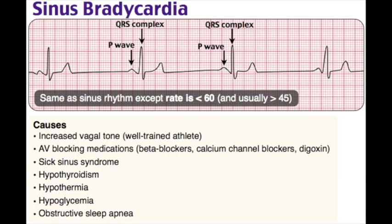Sinus bradycardia: heart rate under 60 bpm from the sinus node. Physiologic causes: well-conditioned athletes, vasovagal reaction, nausea/vomiting. Pathologic causes: increased intracranial pressure (Cushing's triad), beta blockers, calcium channel blockers, digoxin, carotid massage, SA node ischemia, gram-negative sepsis, hypothyroidism. EKG: regular, slow rhythm under 60, normal P waves with every P followed by QRS. Management: if symptomatic or unstable — atropine; if unresponsive, epinephrine or transcutaneous pacing. If asymptomatic — observe or cardiac consult if pathologic.